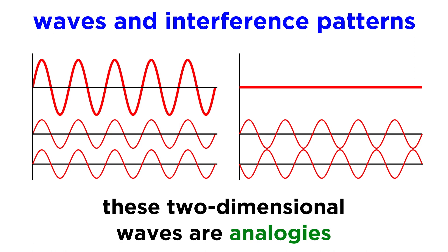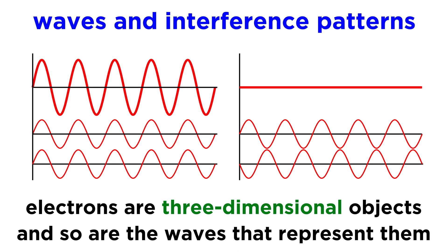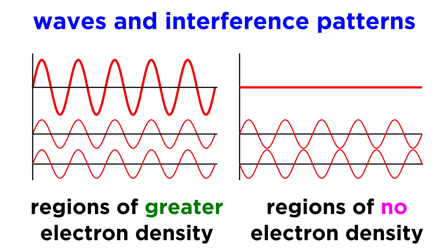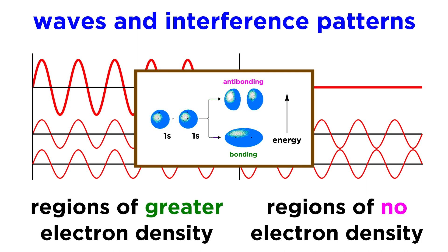For this to make more sense, we simply need to understand that these images of waves are just two-dimensional analogies to help us visualize the type of overlap. Electrons are three-dimensional objects, so the waves are in three dimensions, and constructive interference thus results in regions of greater electron density, while destructive interference results in regions of no electron density, which are depicted by these bonding and antibonding orbitals.